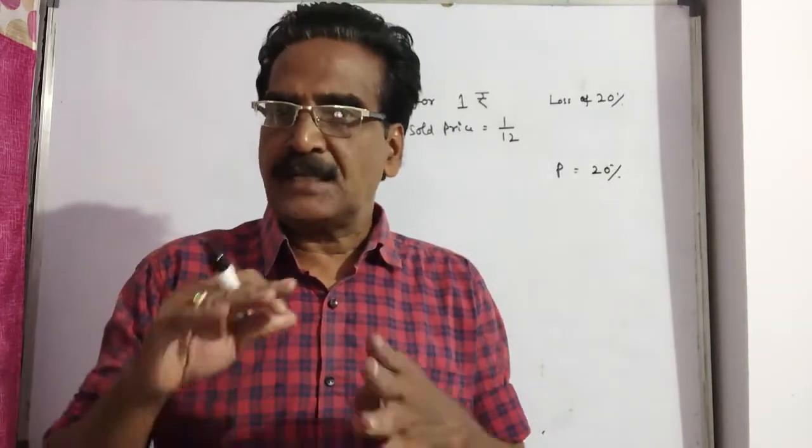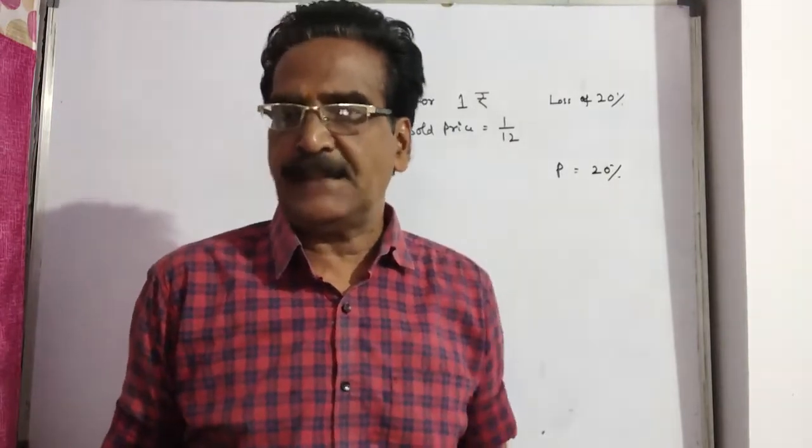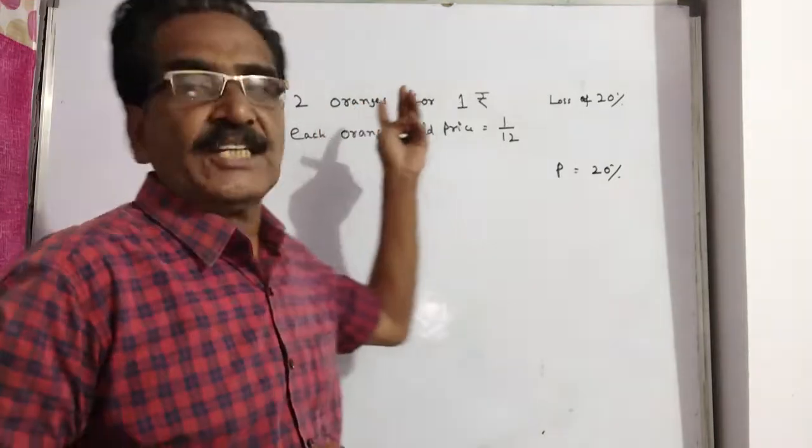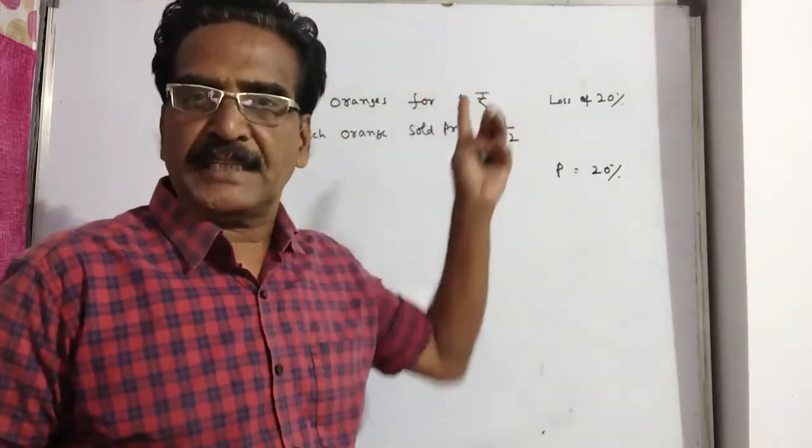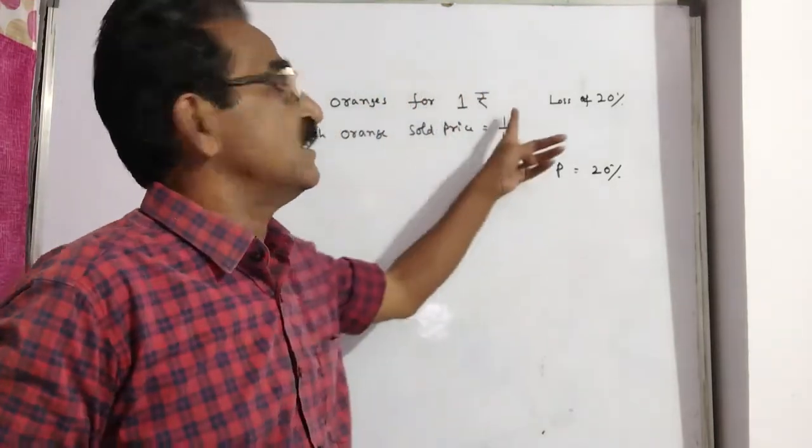How many for a rupee should he sell to gain 20%? He is selling 12 oranges for 1 rupee, that means each orange costs 1 by 12.